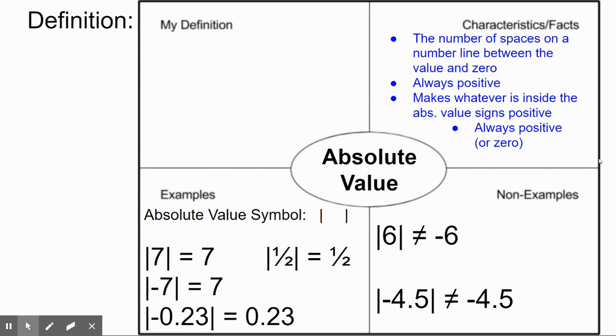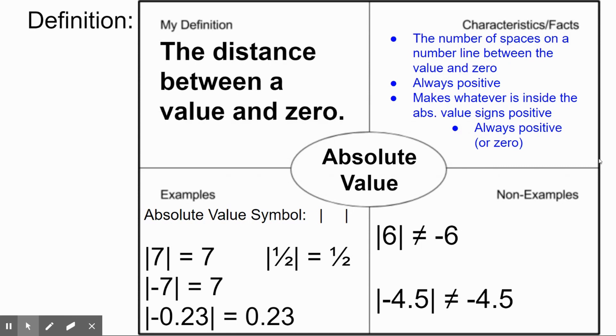And again, it's always positive or zero at least, if you take the absolute value of zero. So for our official definition, we're just going to say that the absolute value is the distance between a value and zero. And that's it. Pause the video if you need to finish writing this down, and then we're going to continue on.